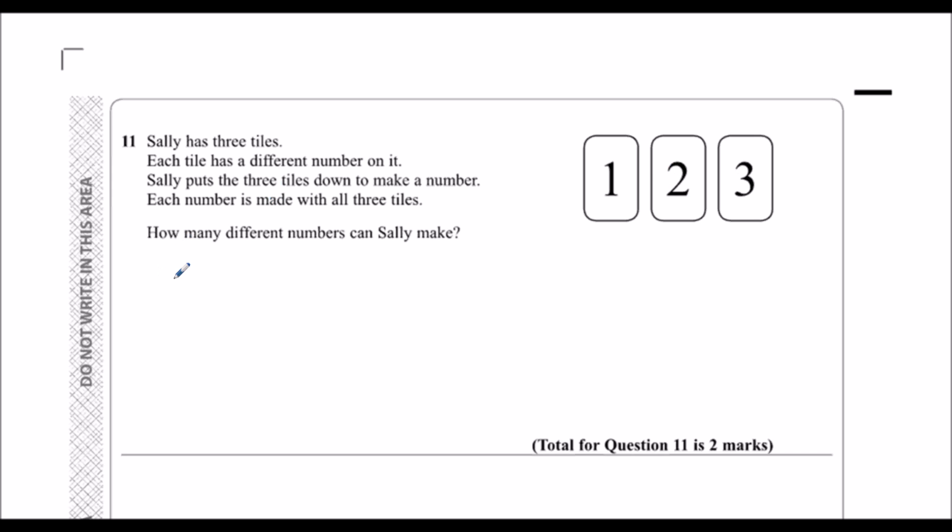So if she puts a one first, two then three, that's the one we've got here. But if I put a one first, I could also put the three second, which gives me 132. So they're the combinations with the one first.